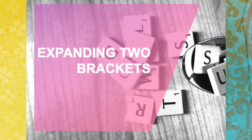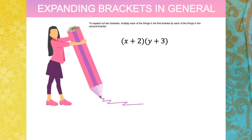Expanding two brackets — expanding brackets in general means that when we expand out two brackets, we need to multiply each of the things in the first bracket by each of the things in the second bracket. So this would be our first bracket, and y plus 3 will be our second bracket.